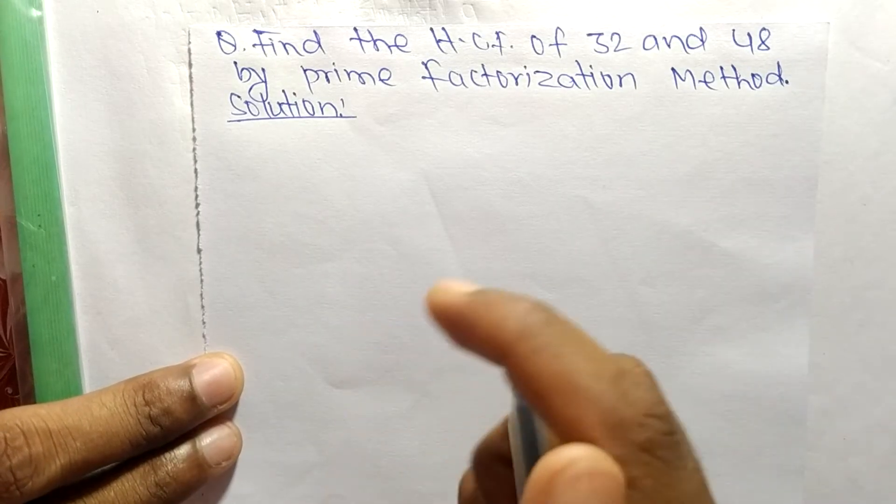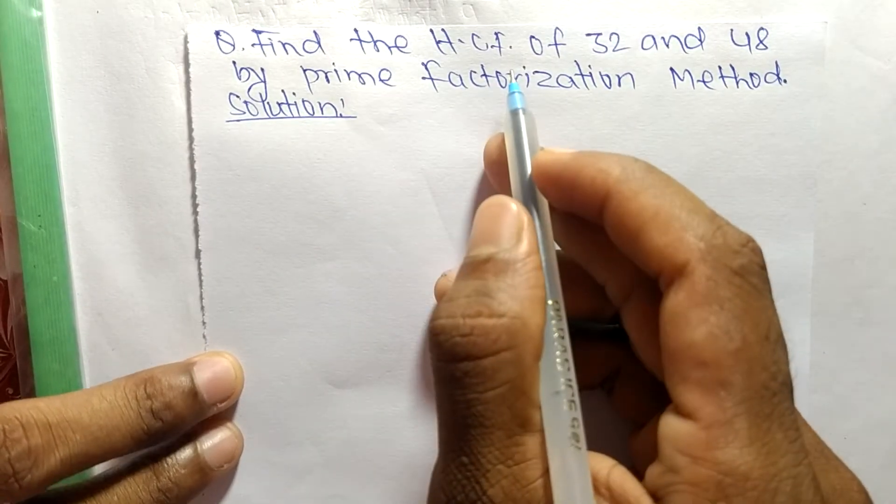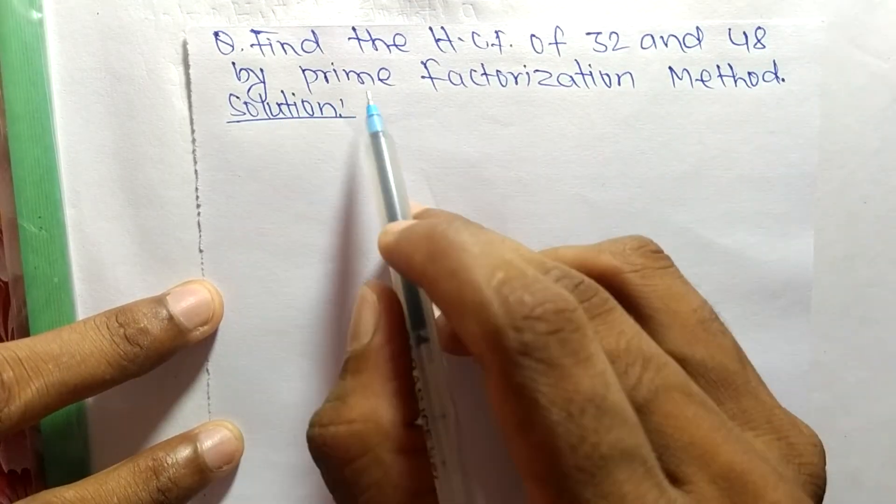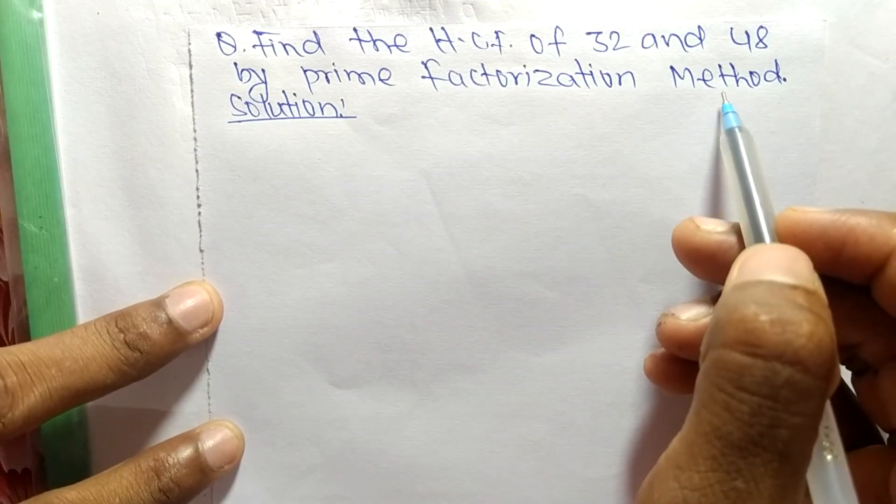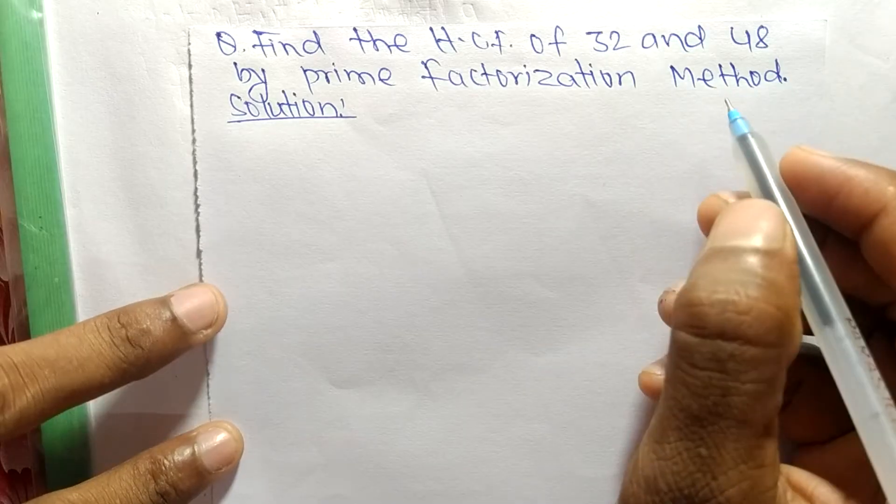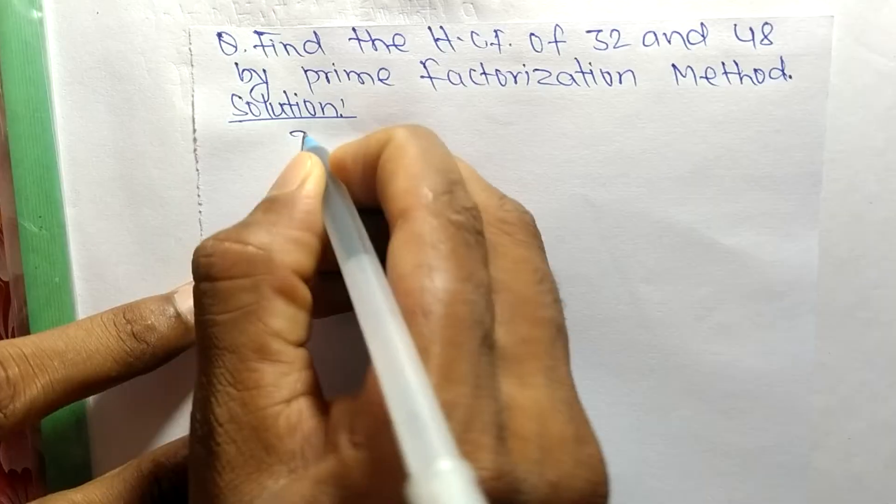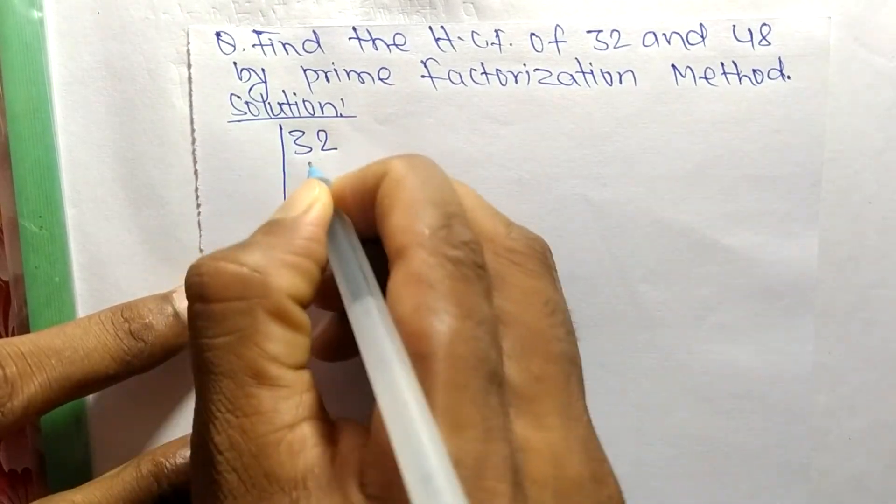Today in this video we shall learn to find the HCF of 32 and 48 by prime factorization method. First of all we find out the prime factors of 32 and 48.